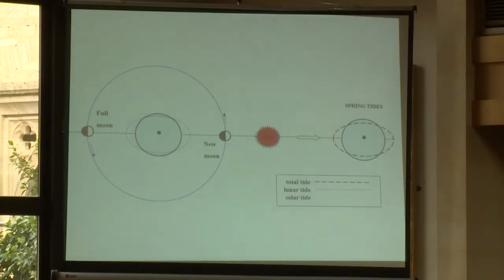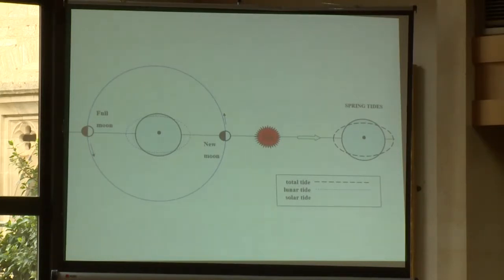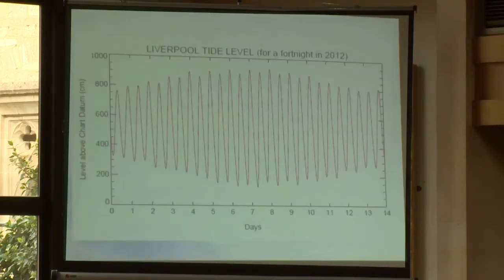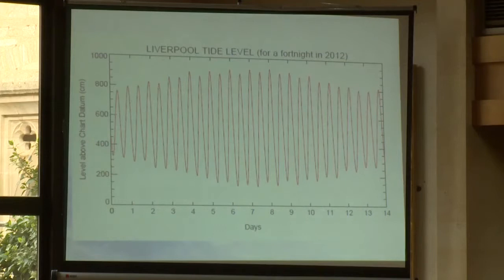The moon and the sun are both important. The moon's tidal effect is roughly two and a half times greater, but the sun matters too. When they line up at spring tides — when the moon and the sun are in alignment, or when the moon is on the opposite side of the Earth but still in alignment — you get spring tides, nothing to do with the season, occurring once a fortnight. When the moon is in its first or last quarter, you get neap tides. Over a fortnight of tide levels in Liverpool, you go from neap tides through springs and back to neaps again.